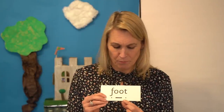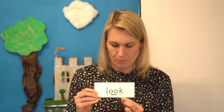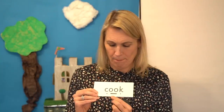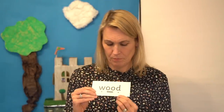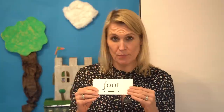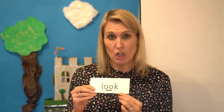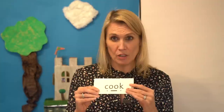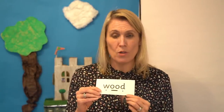Now I'm going to mix the words up. Read each sound as I point, and then blend when I sweep my finger under the word. Off you go. Well done. Read them with me. Let's check you got them right. F, uh, T — foot. B, uh, K — book. L, uh, K — look. K, uh, K — cook. W, uh, D — wood. Amazing. We are on fire today, children.